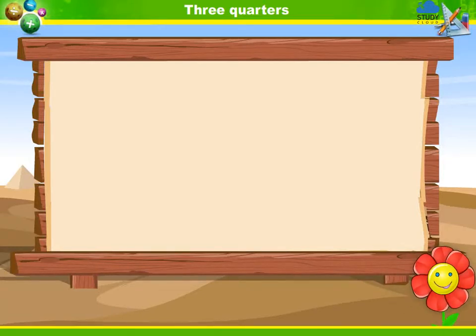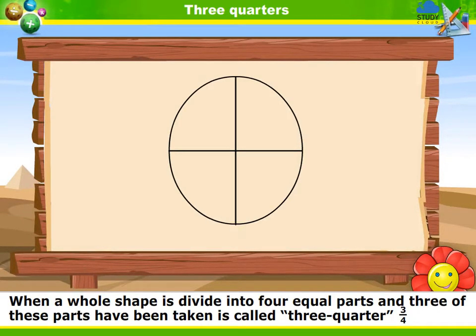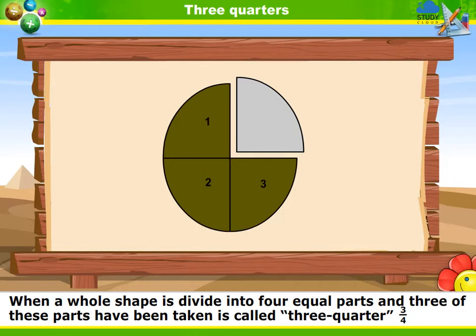Three quarters. When a whole shape is divided into four equal parts and three of these parts have been taken, it is called three quarter.